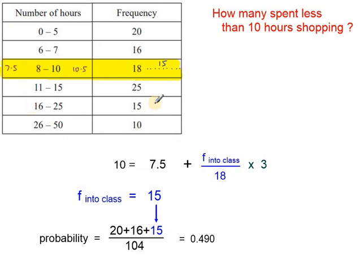So if you're given a grouped frequency table, and you have to calculate probability, check first to see if your data is rounded, and work out your class boundaries, and then from there use the linear interpolation formula to calculate any probabilities.